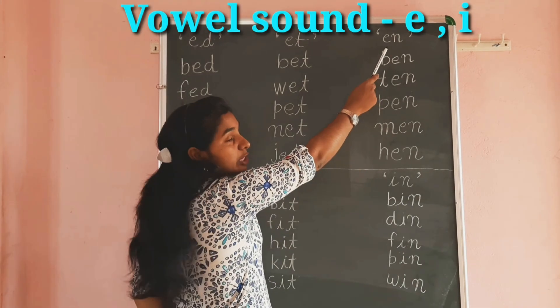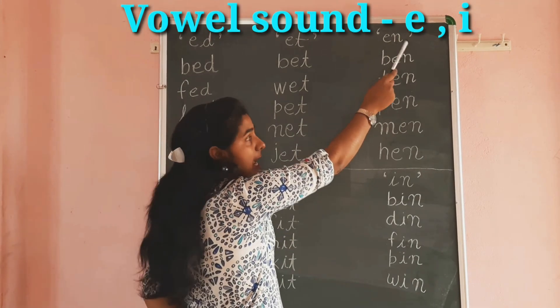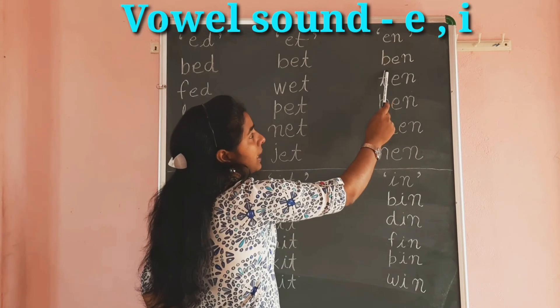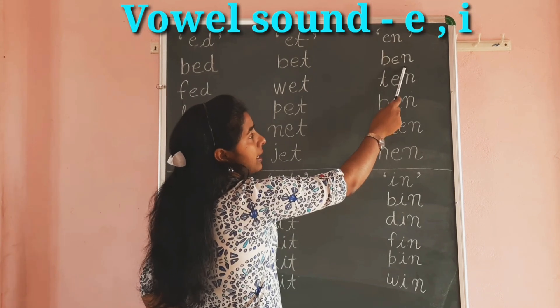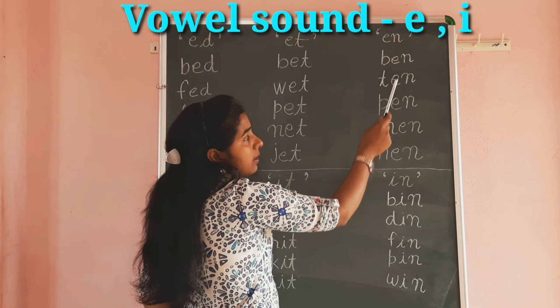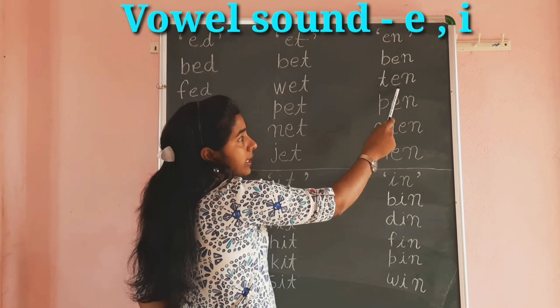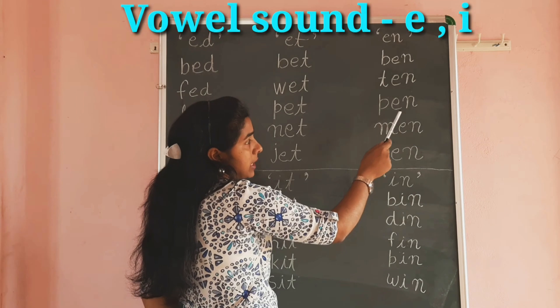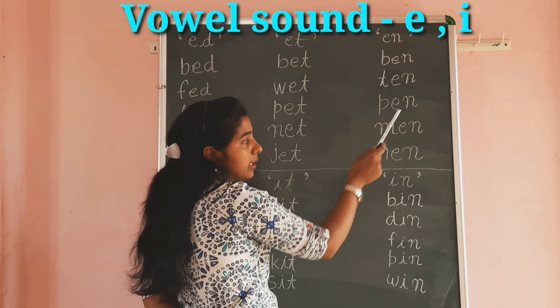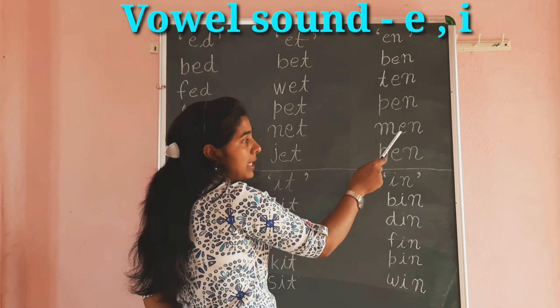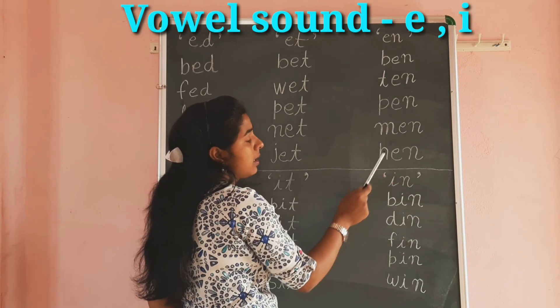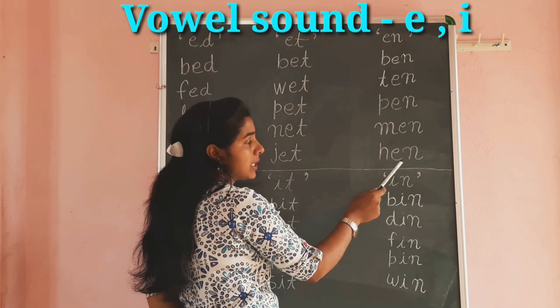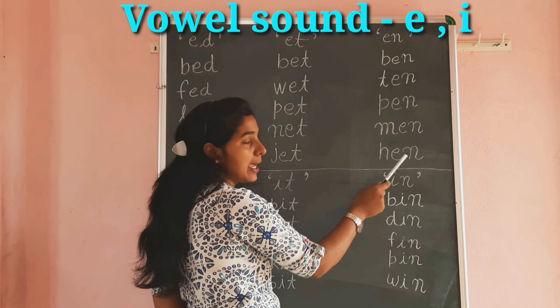Now we make words with the help of E-N: B-E-N, Ben. T-E-N, Ten. P-E-N, Pen. M-E-N, Men. H-E-N, Hen.